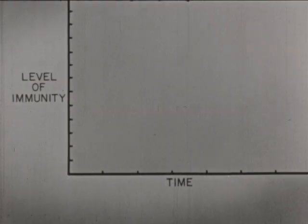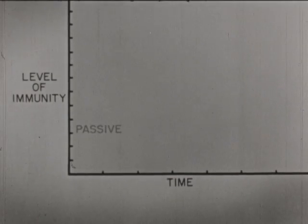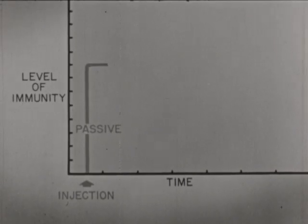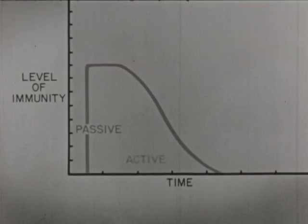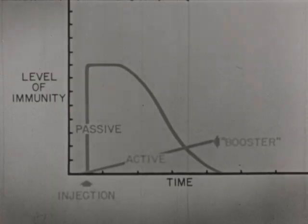There is a distinct difference between passive and active immunity. In passive immunity, upon injection of the antibodies from another individual, a high level of immunity is immediately reached, but it lasts for only a short time. In active immunity, upon injection of the vaccine or toxoid, a gradual increase in immunity occurs. Subsequent injections cause a great increase and the immunity lasts a very long time.